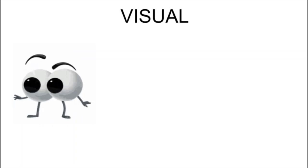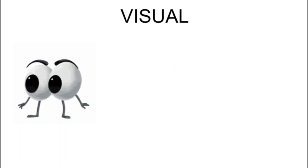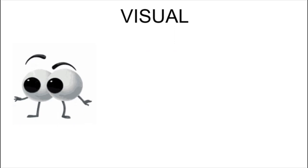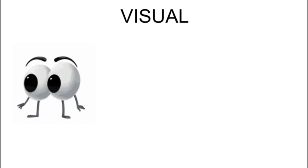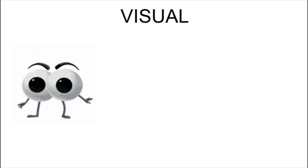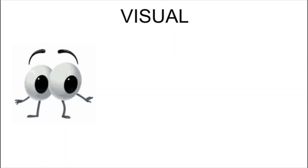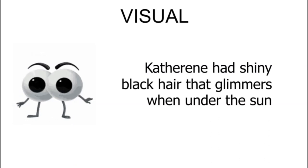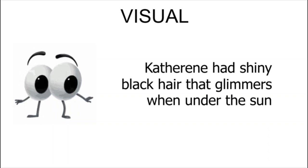Visual. This is the most common form of imagery in literature. Visual imagery has something to do with our eyes — what we see through our sense of sight. Every part of the story includes vivid imageries of the characters and setting, making visual imagery not only common, but abundant. Abundant means there are plenty or many visual images in stories. For example: Catherine had shiny black hair that glimmers when under the sun. It's the author describing the character's appearance through visual imagery.